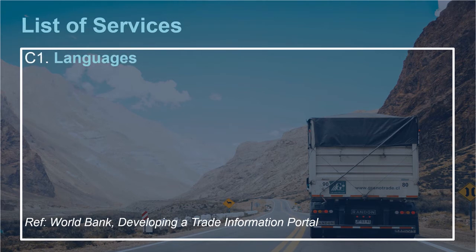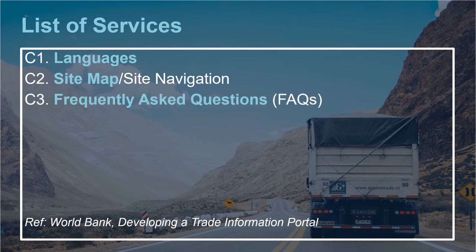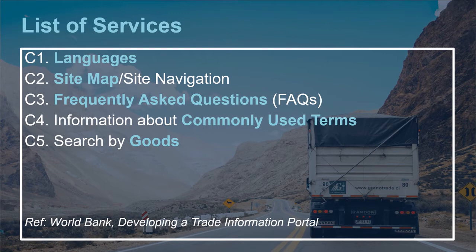It includes language selection, since traders from both inside and outside the country are meant to use this portal. So the site should be available in the local language, plus English and other widely spoken languages, a sitemap or other site navigation tools, a help desk where traders can make inquiries, a frequently asked questions FAQ page, information about commonly used terminology, and a search function where procedures can be searched by inputting descriptions of goods or corresponding HS codes, and import or export location.